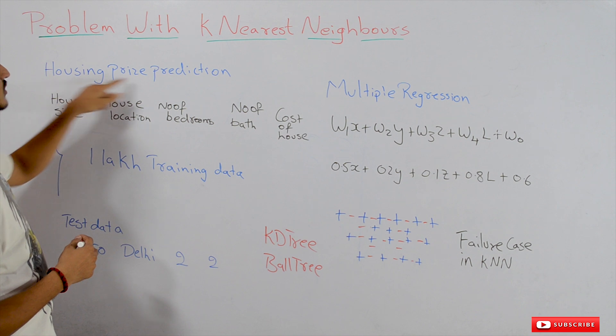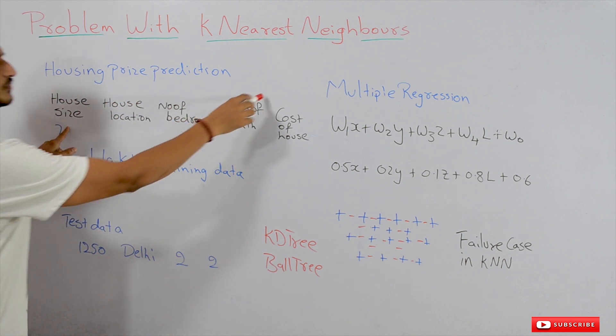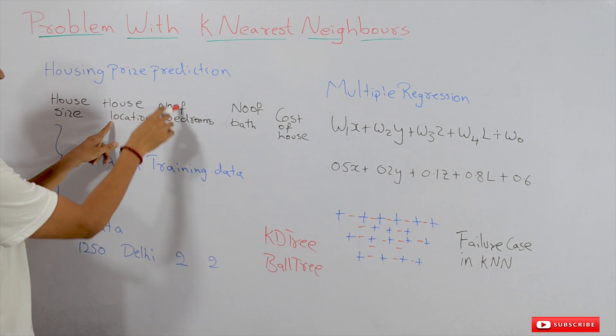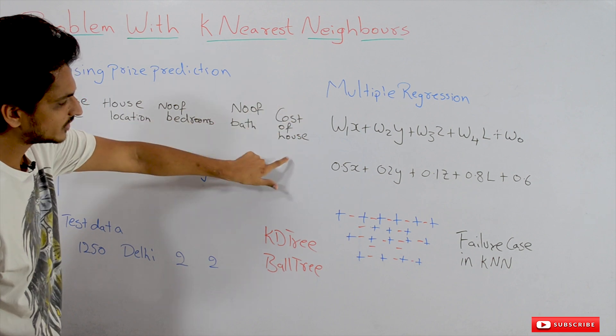The example dataset we'll consider is a housing price prediction dataset. In this dataset, we have four input columns: housing size, house location, number of bedrooms, and number of bathrooms, with one output - the cost of the house.